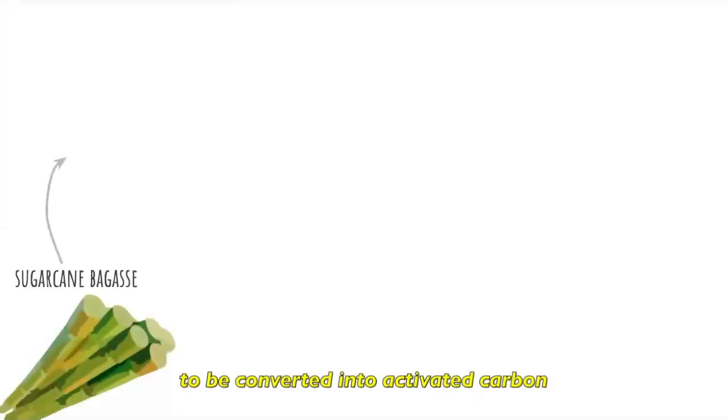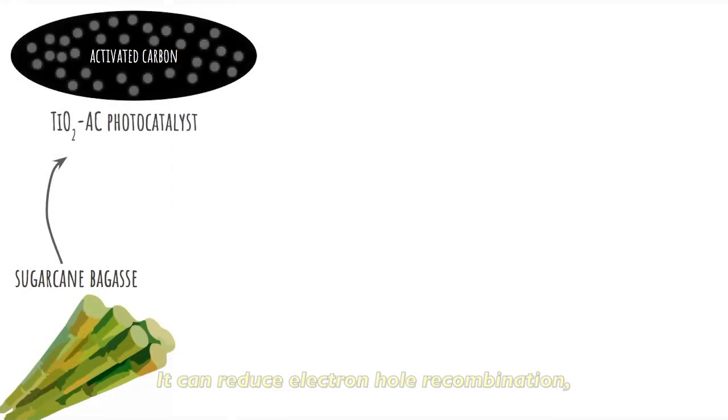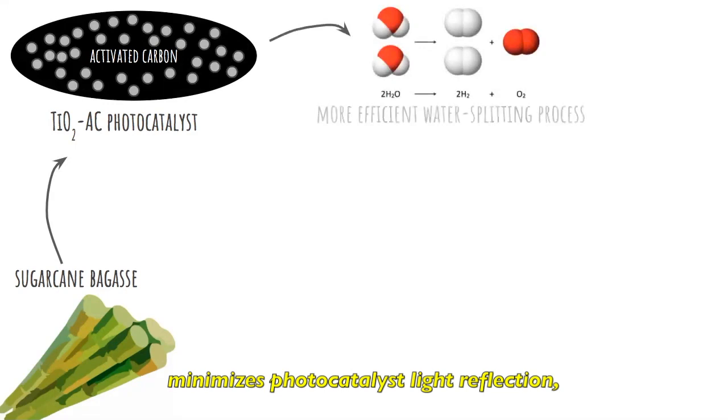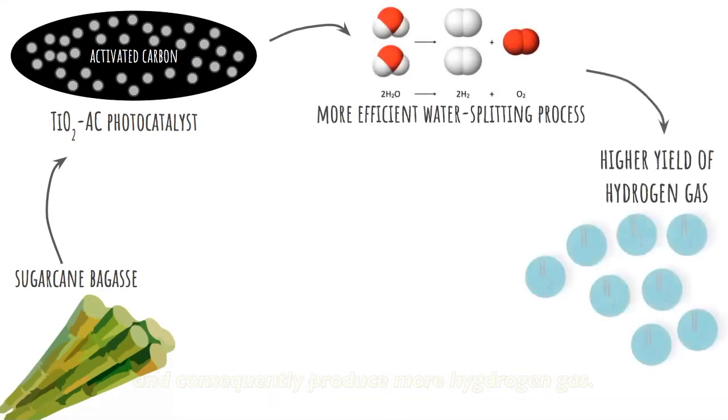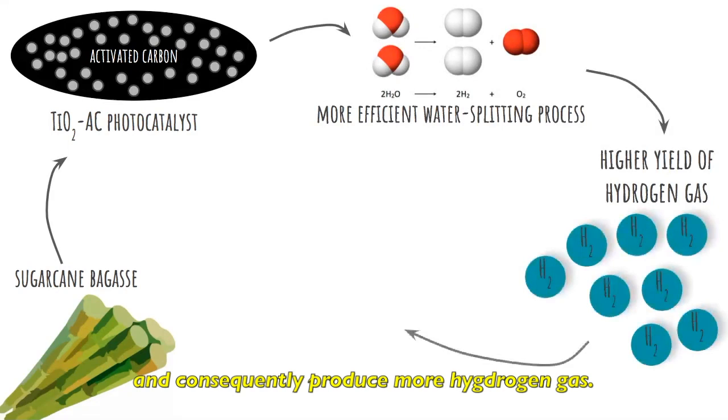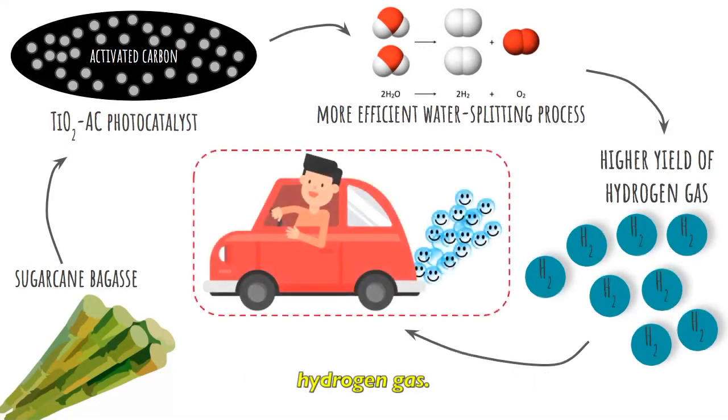Hence, sugarcane bagasse has a high potential to be converted into activated carbon as nanocomposite with titanium oxide. It can reduce electron hole recombination, minimize photocatalyst loss through filtration, increase the life cycle of the photocatalyst, and consequently produce more hydrogen gas, resulting in a cleaner automobile fuel that is hydrogen gas.